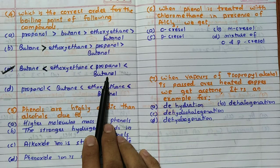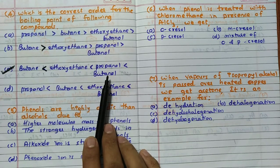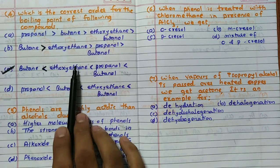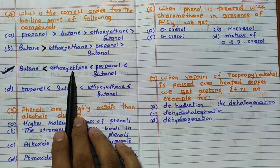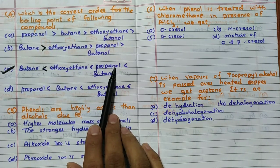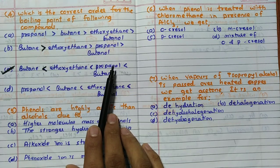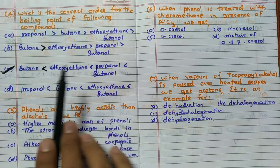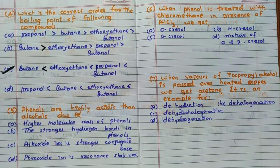Then I will tell you, ethoxyethane and propanol when you compare, definitely butanol is highest because four carbon atom component and also alcohol definitely having high boiling point. Then when you compare, molecular mass is more for this diethyl ether. But boiling point is more for this because of extensive hydrogen bonding. Propanol is more, then ethoxyethane, then butane, so the answer is C.